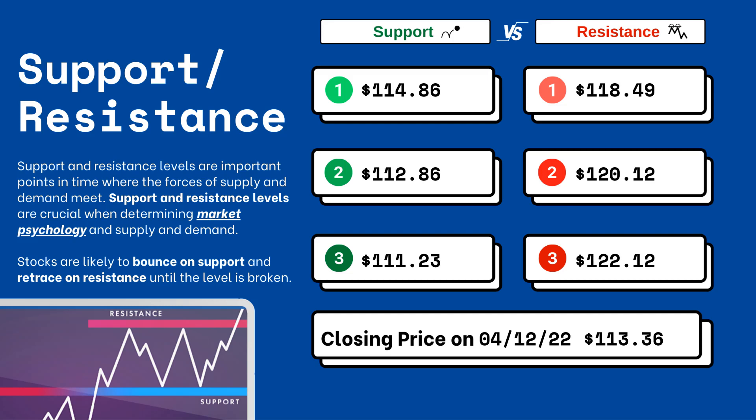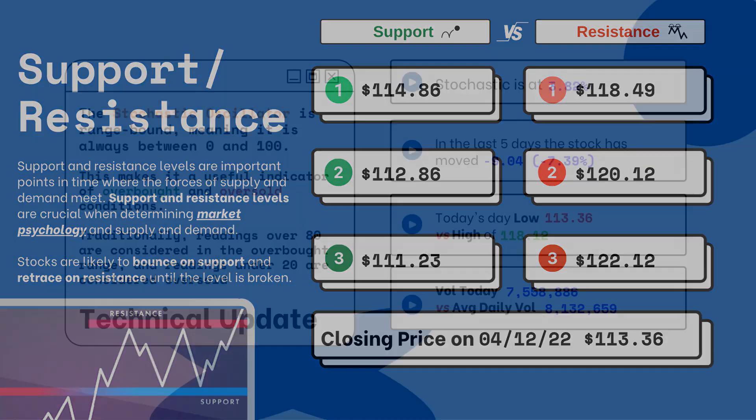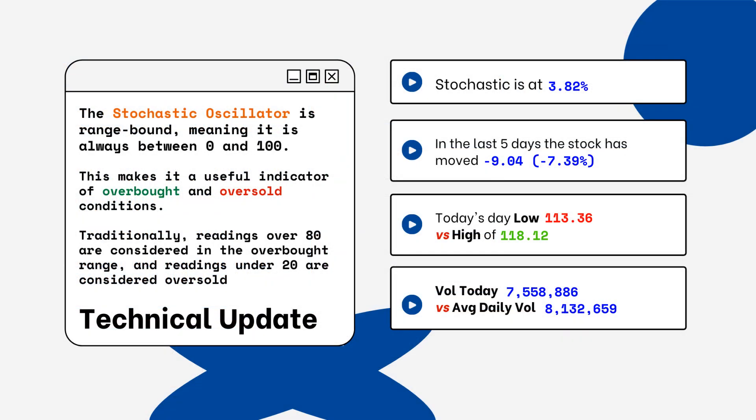These are areas that you want to watch when looking at a particular stock. Stocks typically bounce at support levels and they resist at resistance levels, meaning they'll retrace from that top level. You can see on the right side where the stochastic level is on this particular stock. This is only a technical update because you want to look for overbought and oversold conditions.